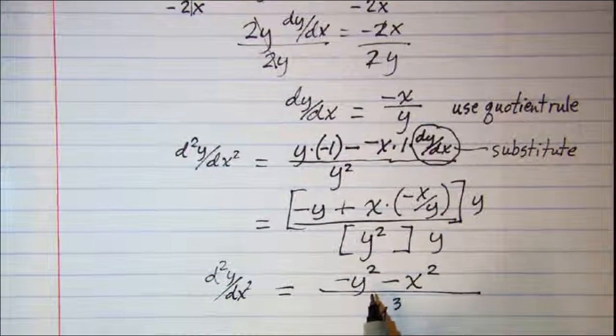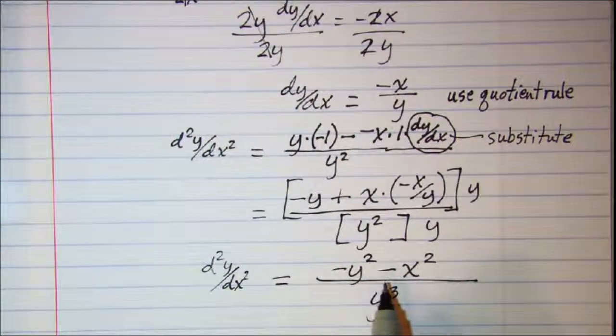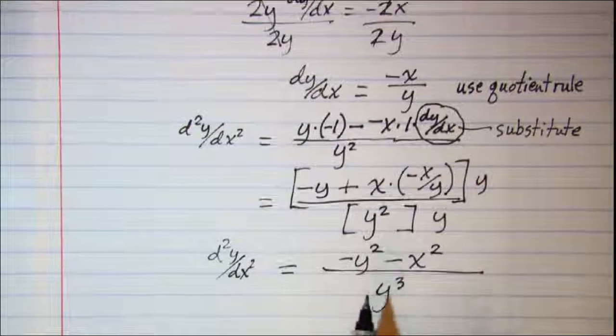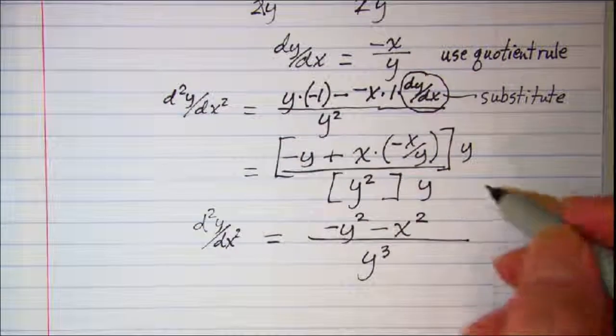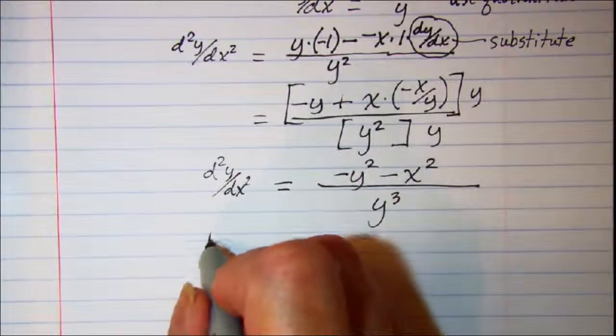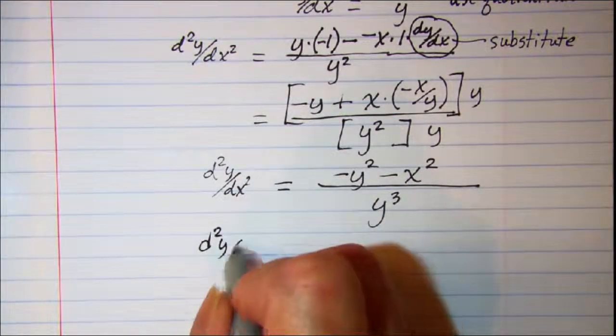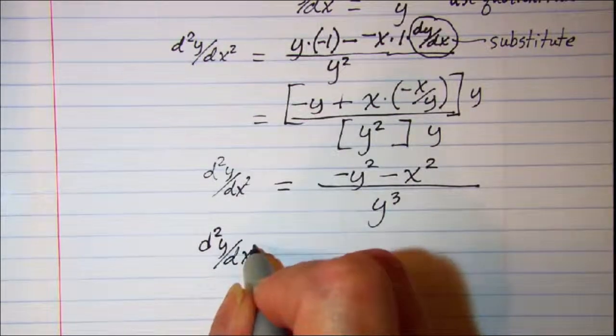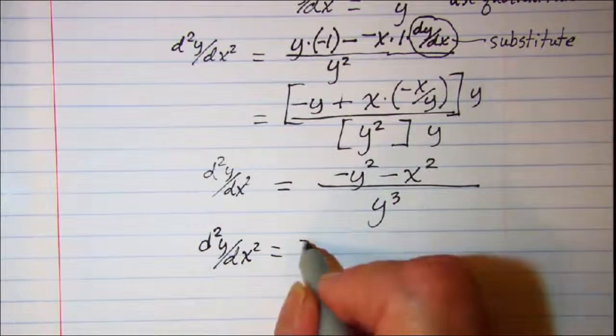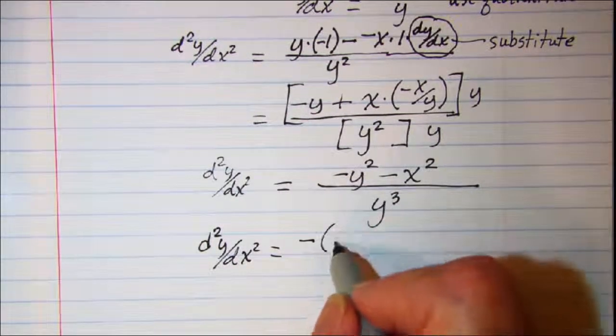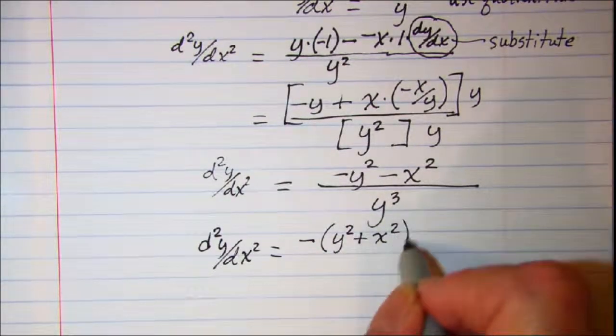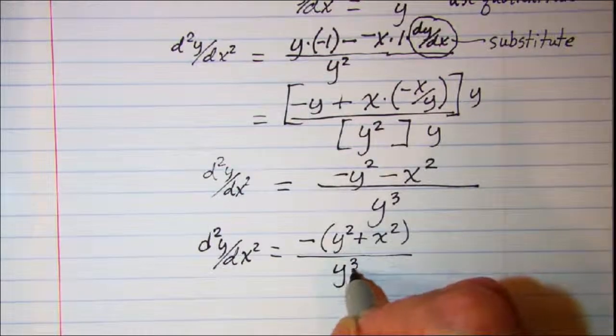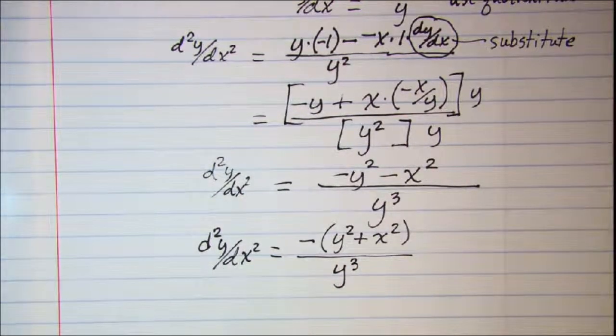Now this needs to be simplified a little bit more. I can see that I have a negative in both of these terms. So my second derivative is a negative y squared plus x squared and that's over y cubed.